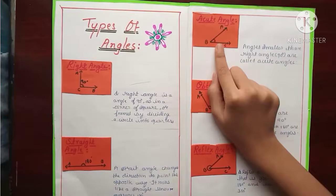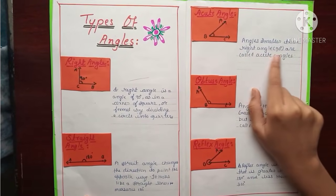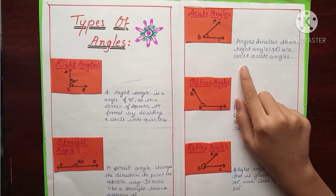Now here is acute angle. Angles smaller than right angle 90 degree are called acute angles.